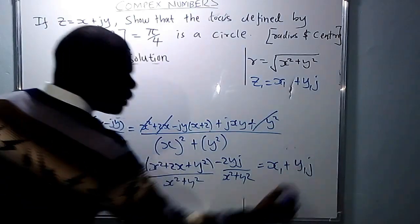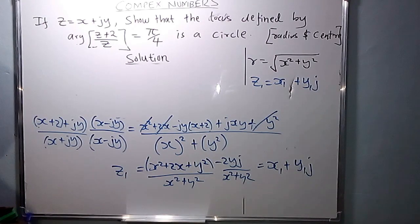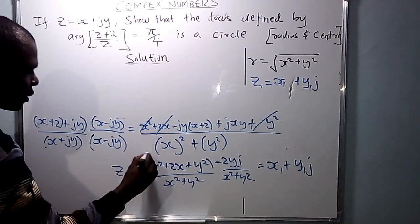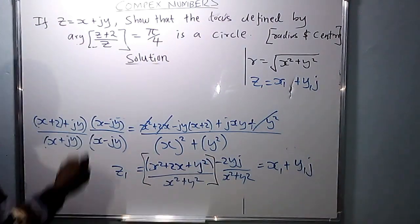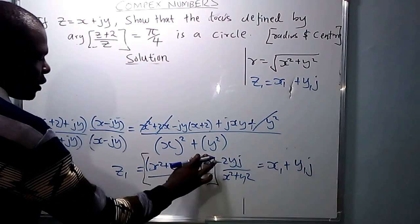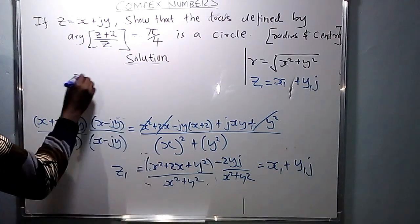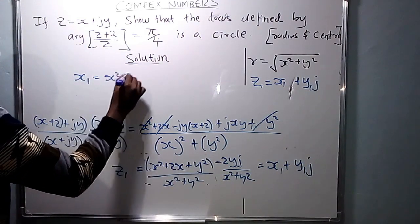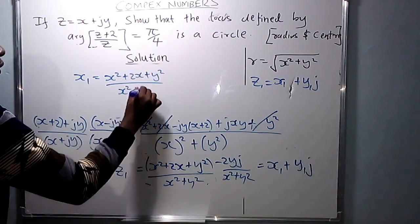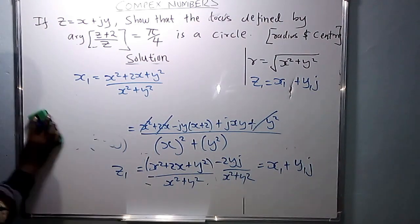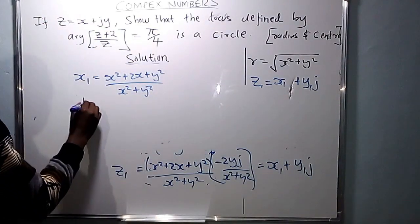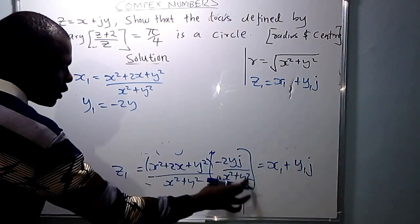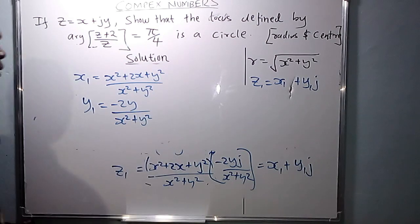So Z1 equals (X² + 2X + Y²)/(X² + Y²) plus J·(−2Y)/(X² + Y²). Comparing with Z1 = X1 + JY1: X1 equals (X² + 2X + Y²)/(X² + Y²), and Y1 equals −2Y/(X² + Y²).